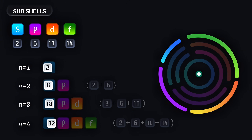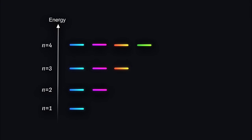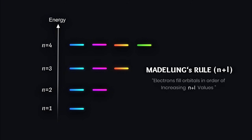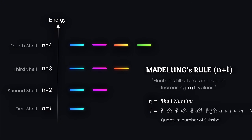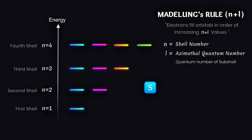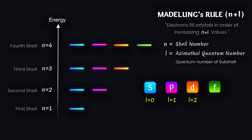So far, everything matches with Bohr's model in terms of capacity. However, electrons start filling from the lowest energy levels. To understand this, we need to look into Madelung's N+L rule. This rule determines the order in which electrons occupy subshells. N is the shell number, and L is the azimuthal quantum number of a subshell: S subshell L=0, P subshell L=1, D subshell L=2, and F subshell L=3.